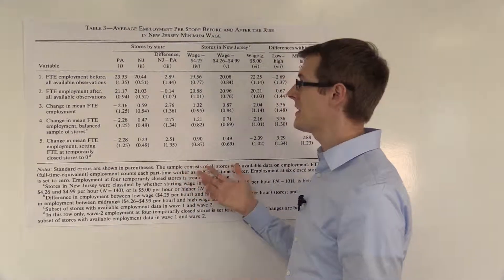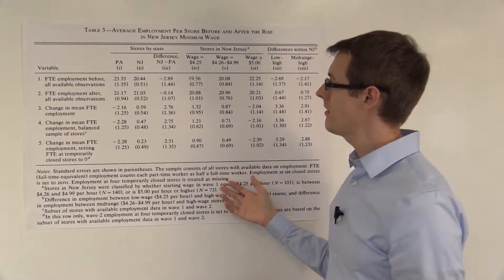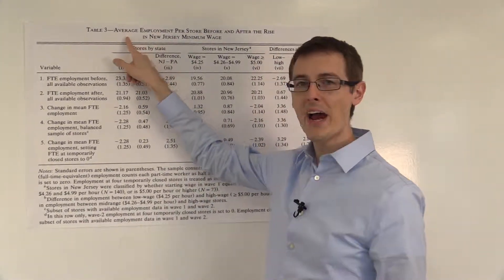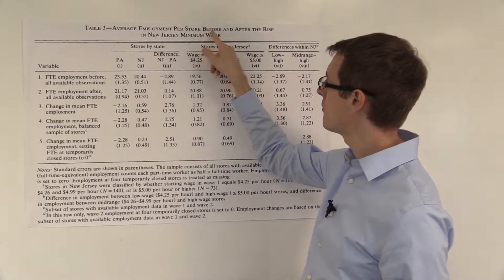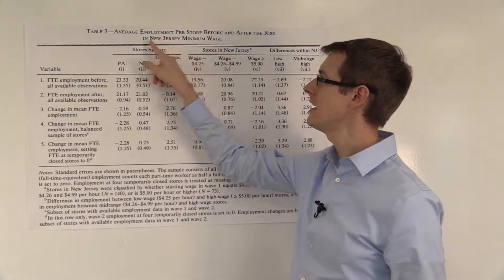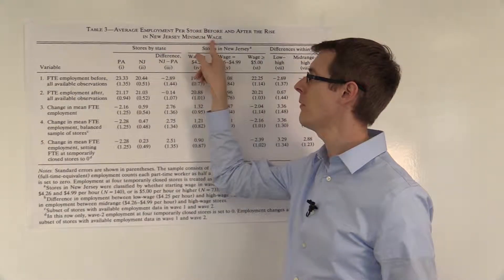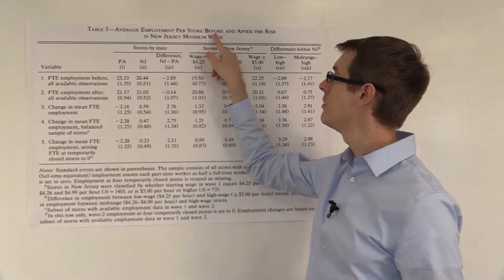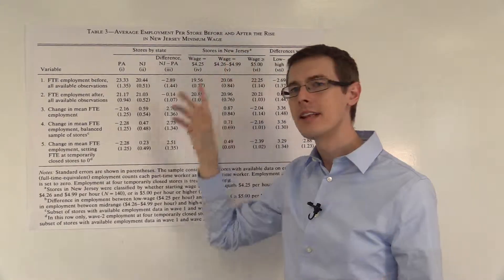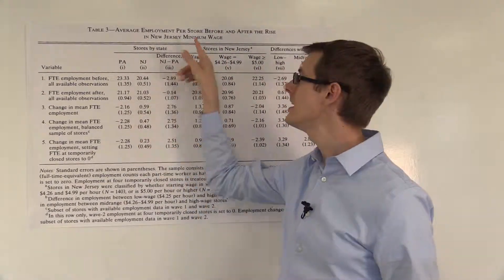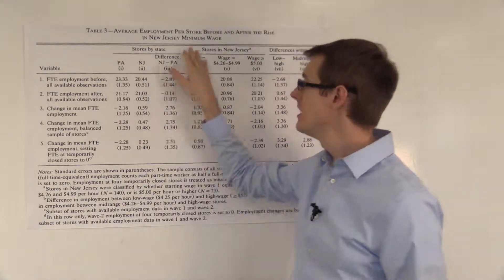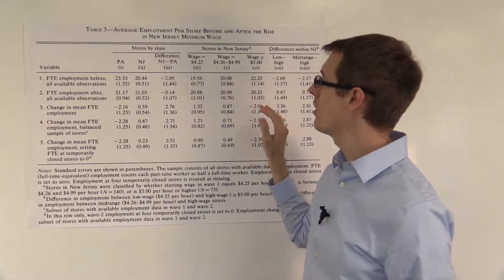And then you come across this table — Table 3 — which says 'average employment per store before and after the rise in New Jersey minimum wage.' Before and after — that's suggesting exactly what difference-in-differences is. So there's your first clue.